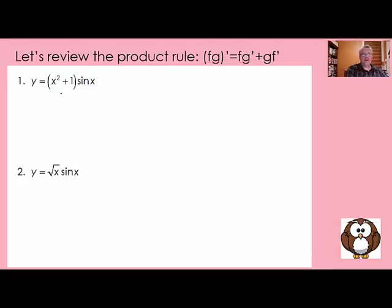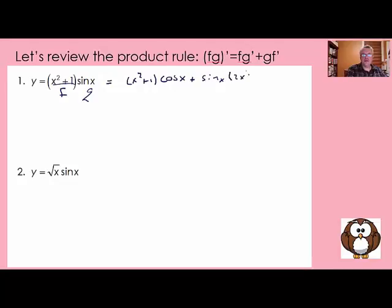So when we have an equation like y equals quantity x squared plus 1 times sine of x, the x squared plus 1 part would be f and the sine of x part would be g. The product rule says take f, that's x squared plus 1, times g prime — the derivative of sine of x is cosine of x — plus g, that's sine of x, times the derivative of f, which is the derivative of x squared plus 1, which is 2x. So this was f times g prime plus g times f prime.